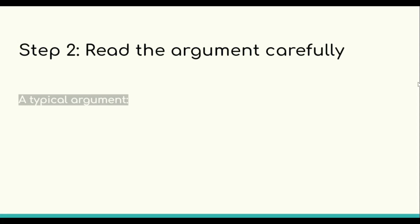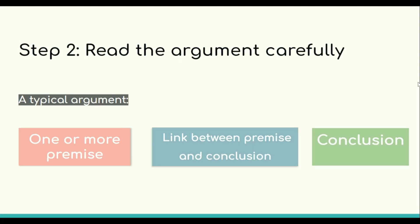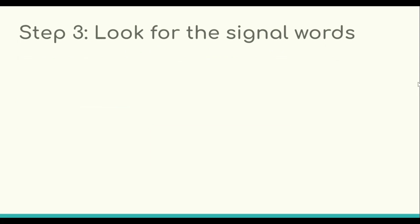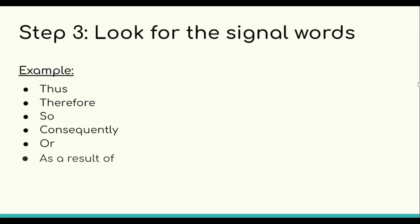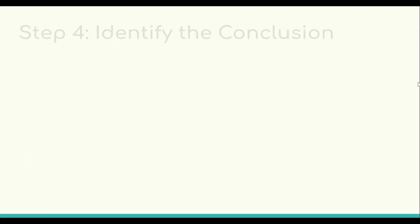To succeed in this question type, you need a keen eye for detail. Read the argument carefully and ensure you fully comprehend the author's perspective and what they are trying to convey. Step three is to look for signal words such as 'thus,' 'therefore,' 'so,' 'consequently,' or 'as a result.' These words often indicate the conclusion.